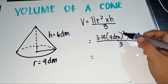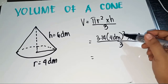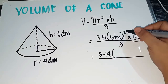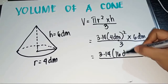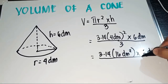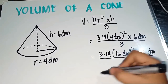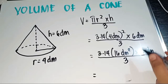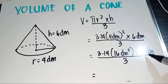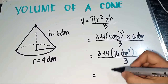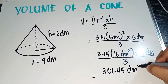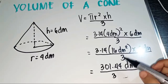Following TERMDAS, let us start with the exponent. 4 dm squared is equal to 16 square decimeters. So we have 3.14 times 16 square decimeters times 6 dm, all over 3. Multiplying 3.14 times 16 times 6 gives us 301.44 cubic decimeters, all over 3.